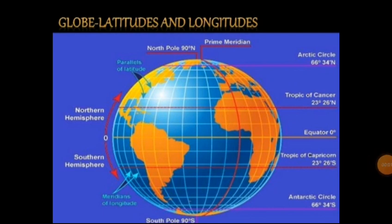Dear students, today we will do geography chapter number 2: Globe, Latitudes and Longitudes. In this chapter we are going to read about the globe — what is a globe, what are the advantages of globes, disadvantages of globes, latitudes, what are the latitudes and longitudes, and about the time zone also. So now let's start our chapter.